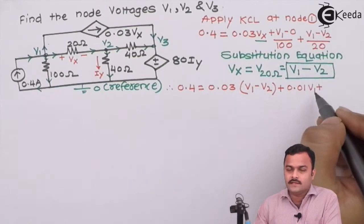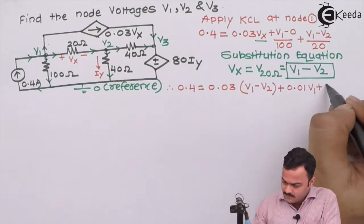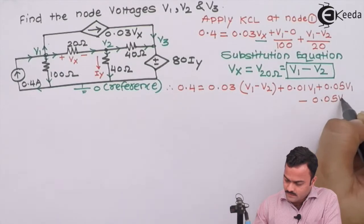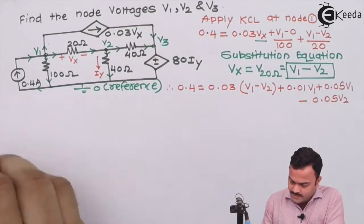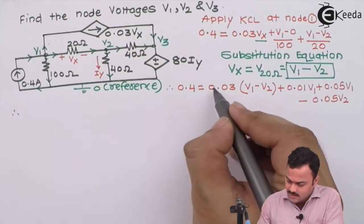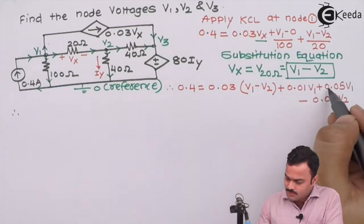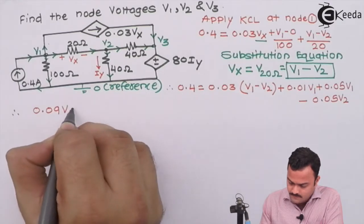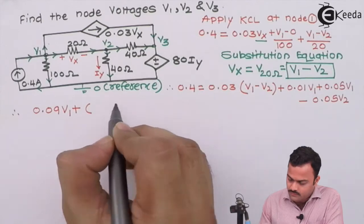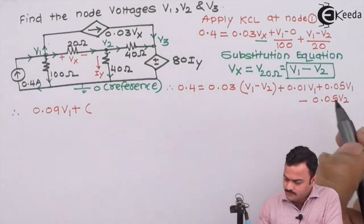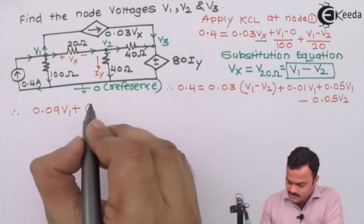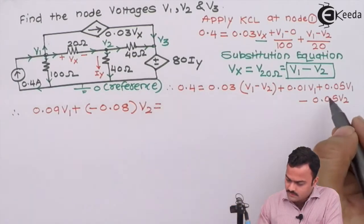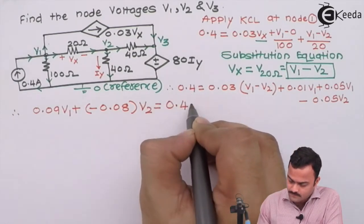Upon simplifying, we get: 0.03 V1 plus 0.01 V1 plus 0.05 V1 for the V1 terms. For V2 we have minus 0.03 V2 minus 0.05 V2, giving minus 0.08 V2. This simplifies to the first equation: minus 0.09 V1 plus 0.05, as equation number 1.